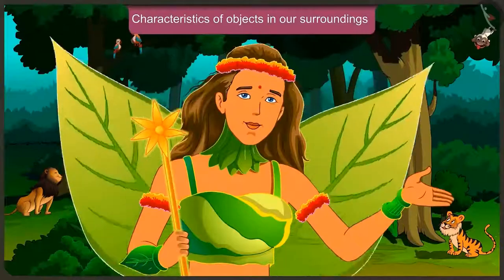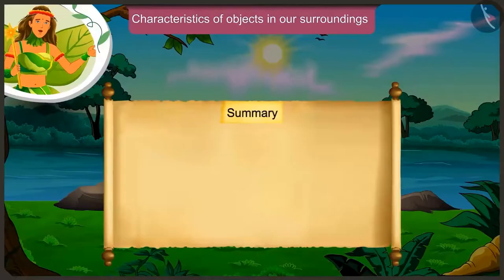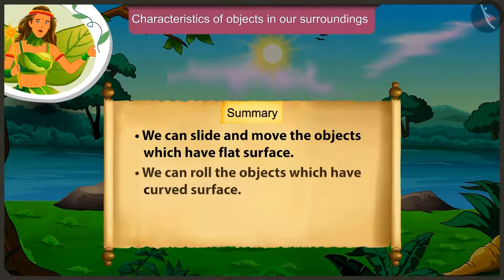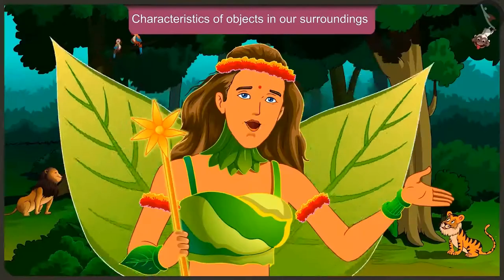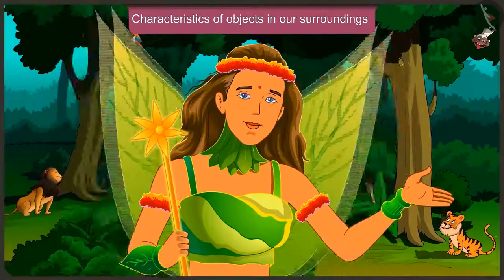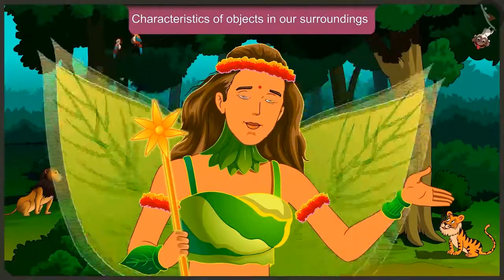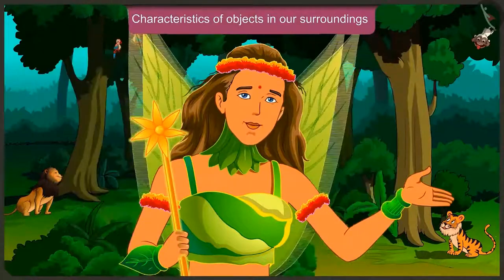Friends, today we understood some interesting facts about the characteristics of objects around us. We can slide objects with a flat surface, roll objects with a round surface, and both roll and slide objects with a cylindrical surface. You too can learn about more such objects with flat and curved surfaces. In the next video, we will learn some more characteristics of objects around us.